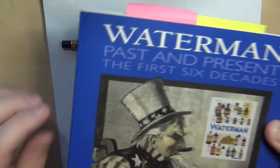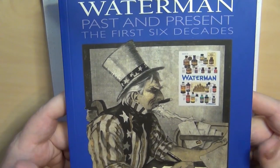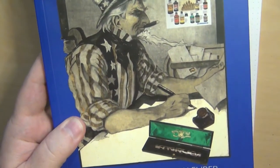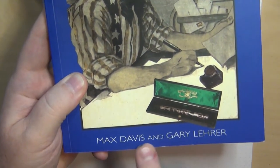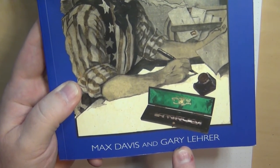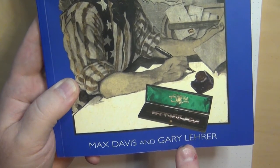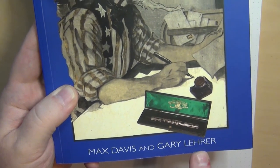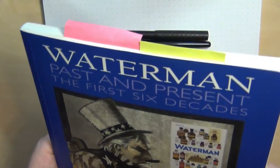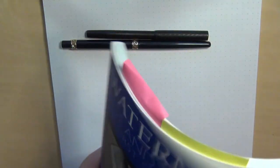In the Waterman numbering system, the last digit represents the kind of nib. So a 22. And you would essentially unscrew that, put your ink in it, and be able to write with it. So I'm going to show you these two pens in this book right here. I've shown you this book a bunch of times, Waterman, Past and Present, The First Six Decades, Max Davis and Gary Lehrer.